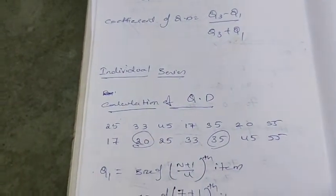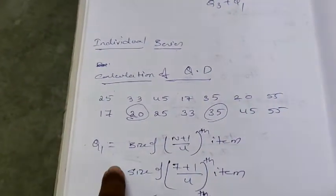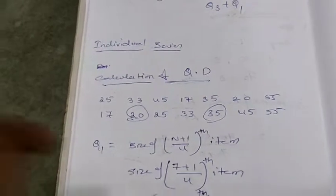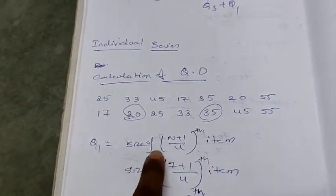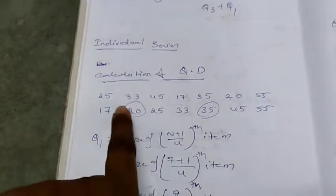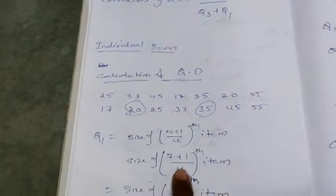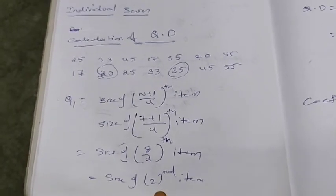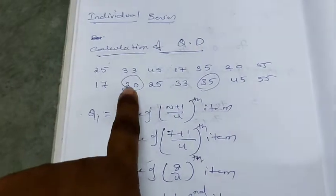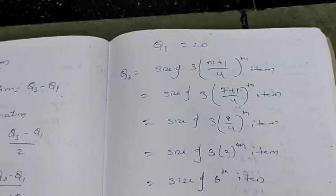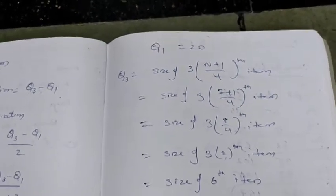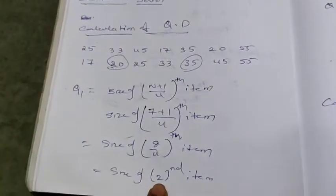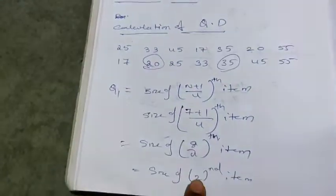Now next Q1. What is Q1 formula? Same as in median. Q1 is equal to, for individual series, size of n plus 1 by fourth item. So size of n is n, number of items is one, two, three, four, five, six, seven. So seven plus one by four means eight by four. Size of eight by four is second. So second place is 20, so Q1 will be 20. Q1 is equal to 20.